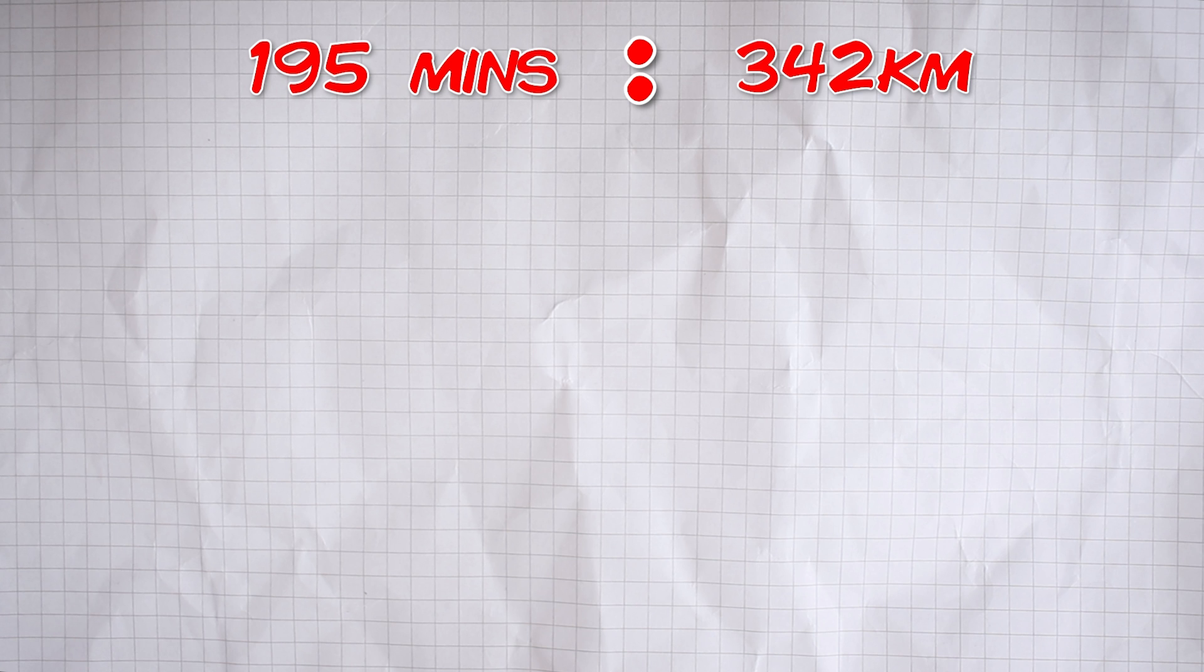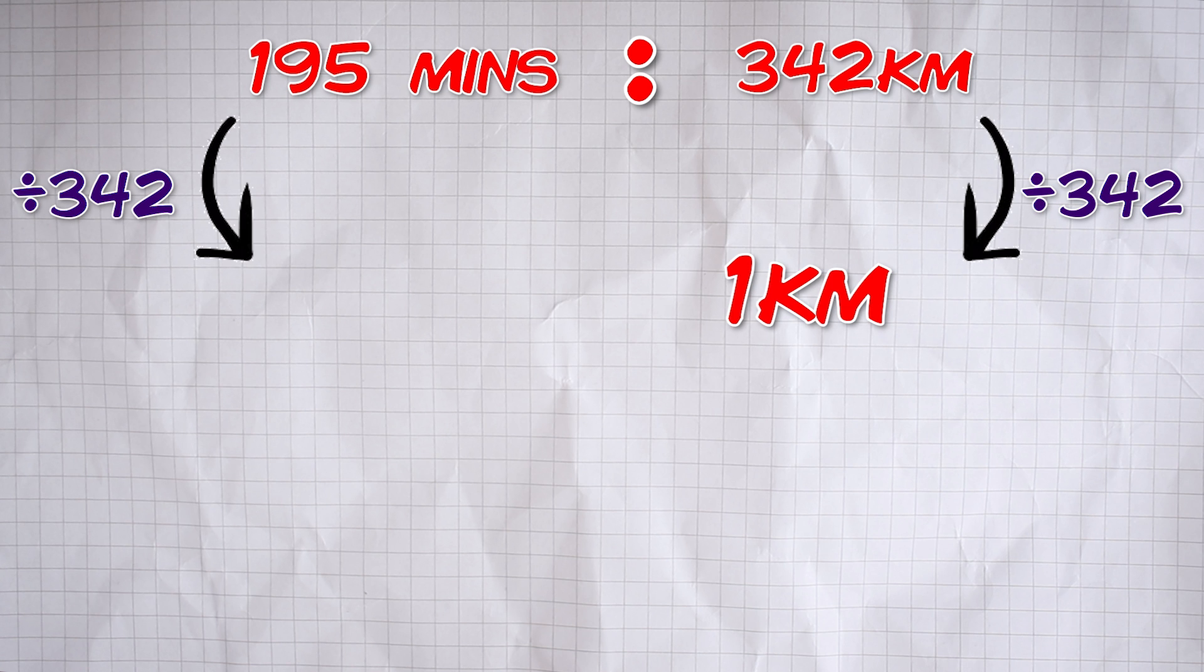To do that we'll divide both sides by 342 and the right-hand side will now just go down to one and on the left-hand side we have to divide 195 by 342. For the moment, I'm not actually going to work out that as a decimal. I'm just going to write it as a fraction like this, 195 over 342 because it's just a nice efficient way of showing that division without having to write out a long answer with lots of decimals or without having to round off at this stage and we'll just do the full calculation at the end.